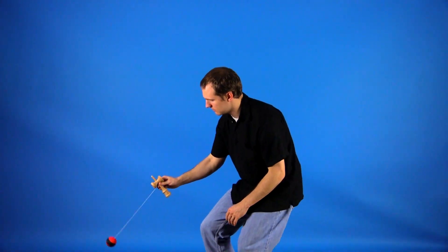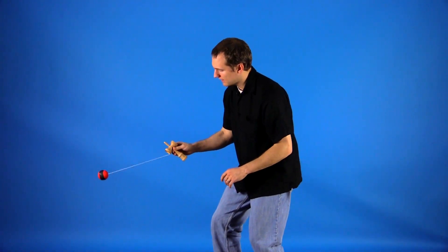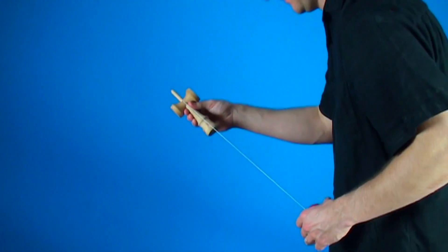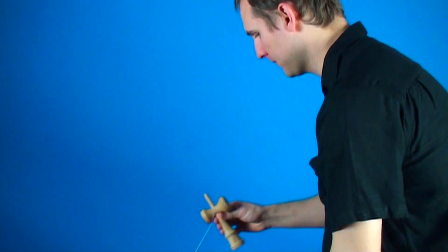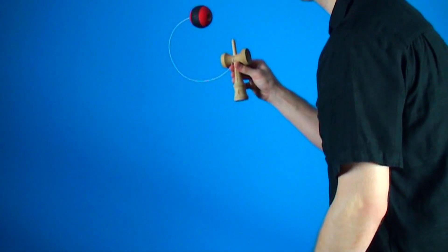What you're going to do is use your knees and your arm to pull back on that string using the small cup. That will cause the Tama to rotate as it comes forward.